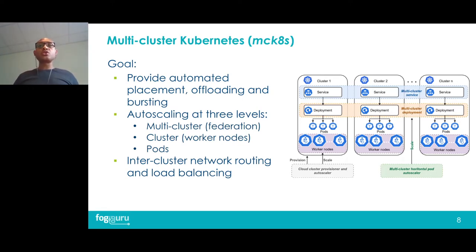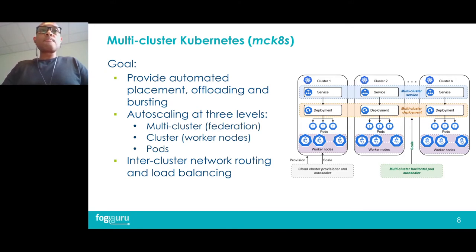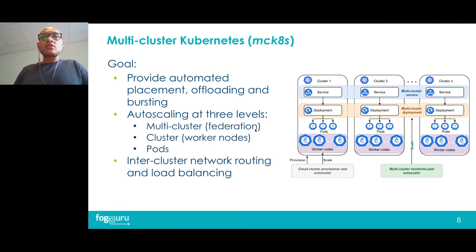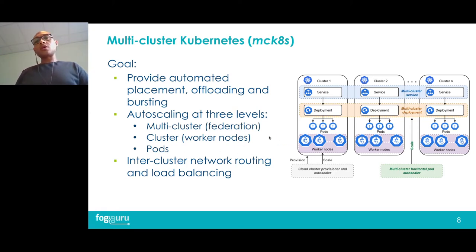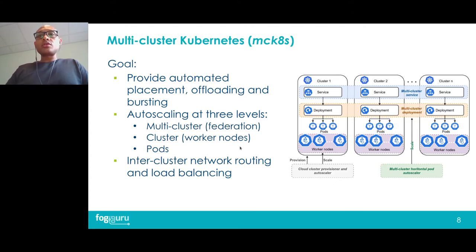Our aim is to address these challenges by providing automated placement, offloading, and bursting mechanisms. We also provide auto-scaling at three levels: at the federation level where Kubernetes clusters are added or removed dynamically, at the cluster level where worker nodes are added or removed, and at the application level where pods are added or removed based on workload or resource utilization. The final goal is to provide inter-cluster network routing and load balancing.